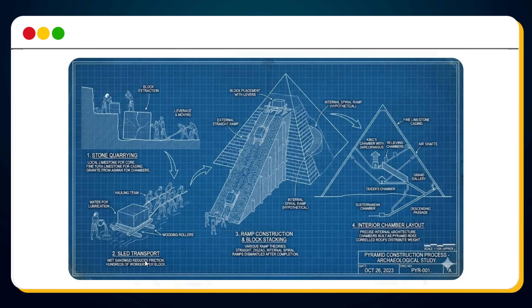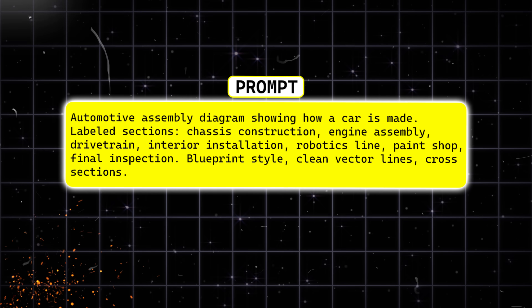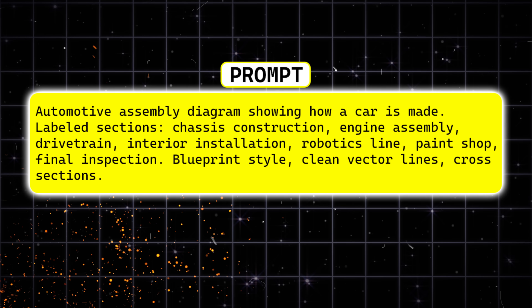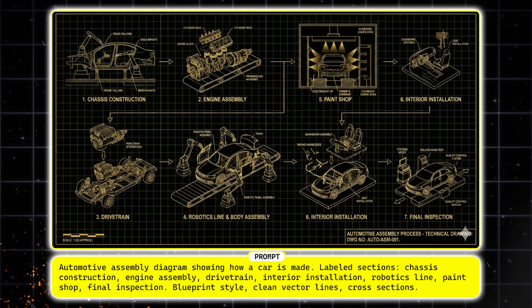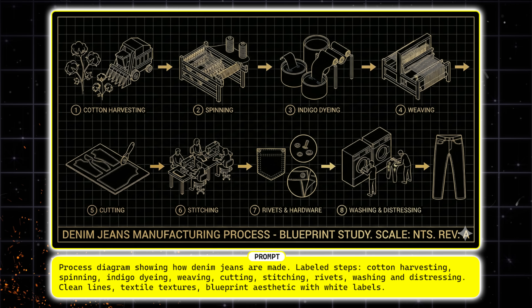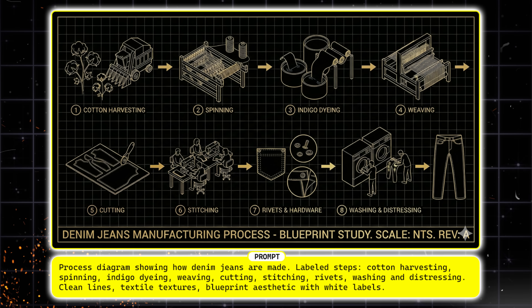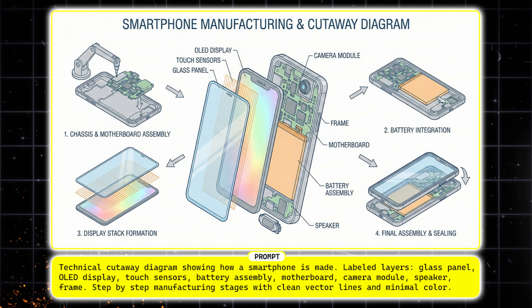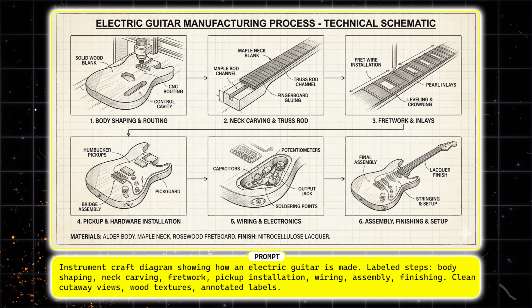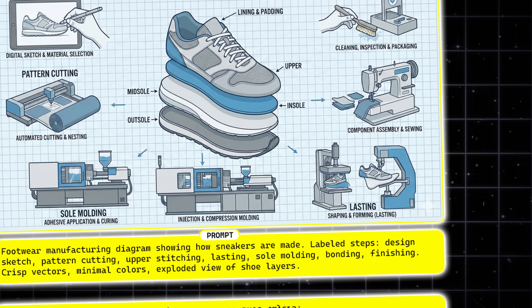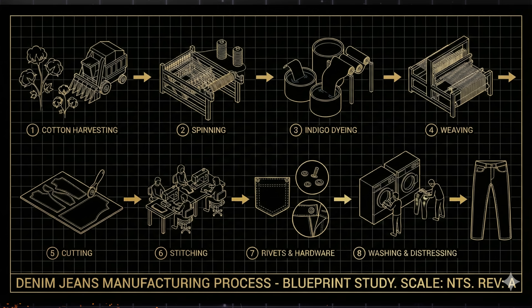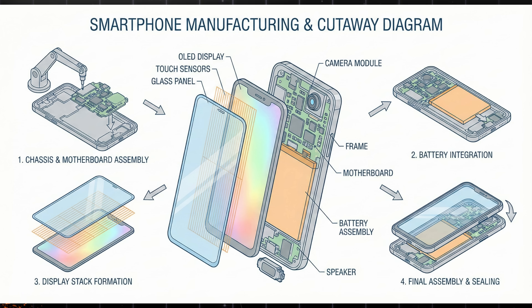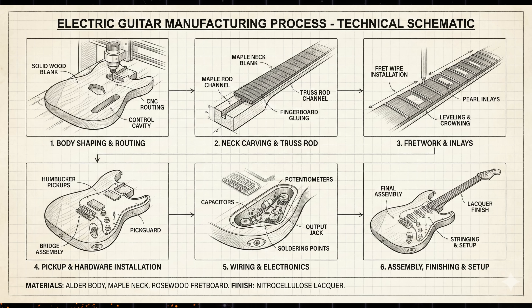The first time I saw this, it honestly blew my mind. Then I tried the same blueprint format for the car manufacturing process and Nano Banana Pro generated this. Next, I used it for jeans manufacturing and it created this. I tested smartphone manufacturing, electric guitar manufacturing, and even sneaker manufacturing. And every single time, Nano Banana Pro produced a perfectly detailed blueprint diagram.